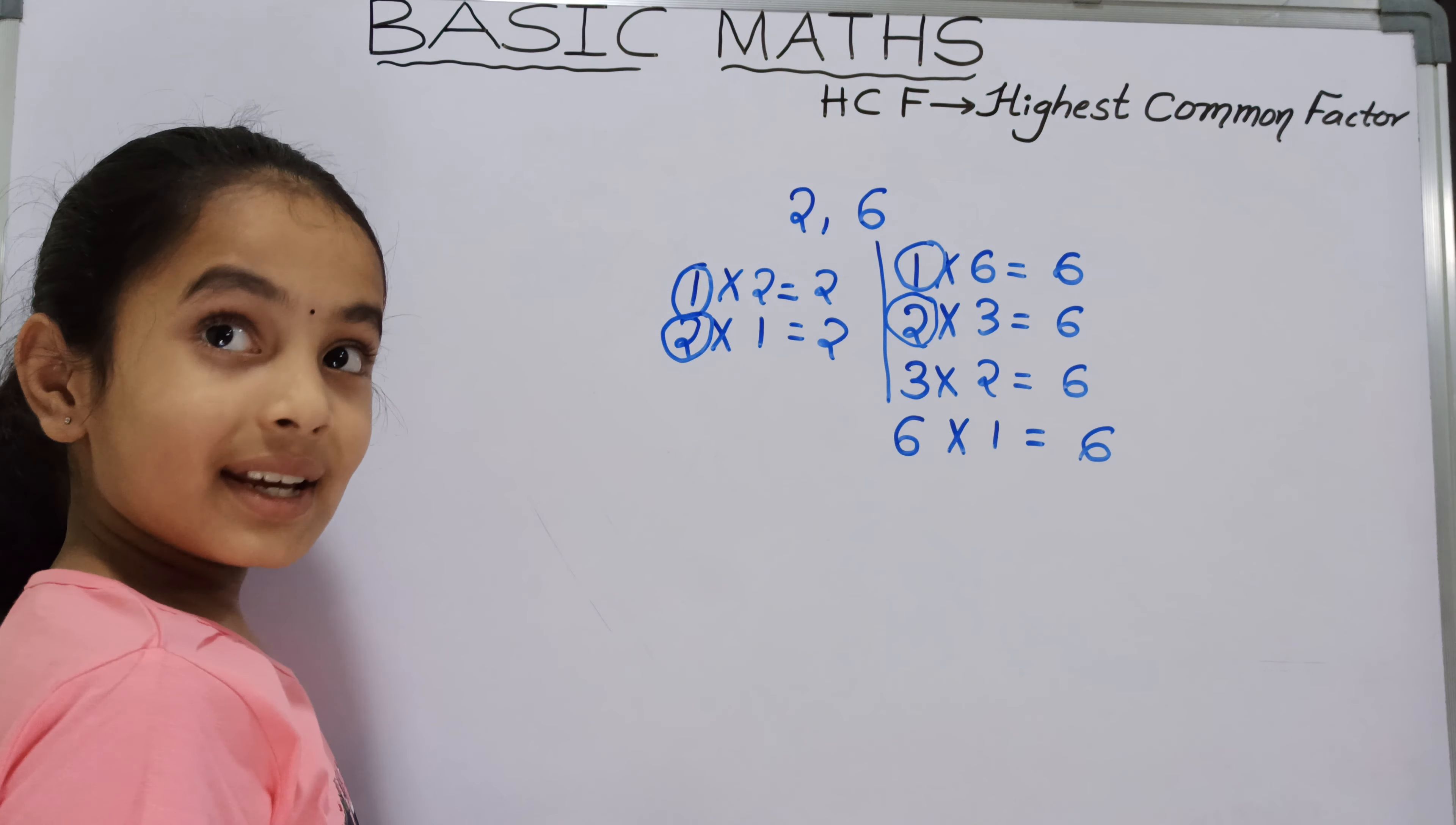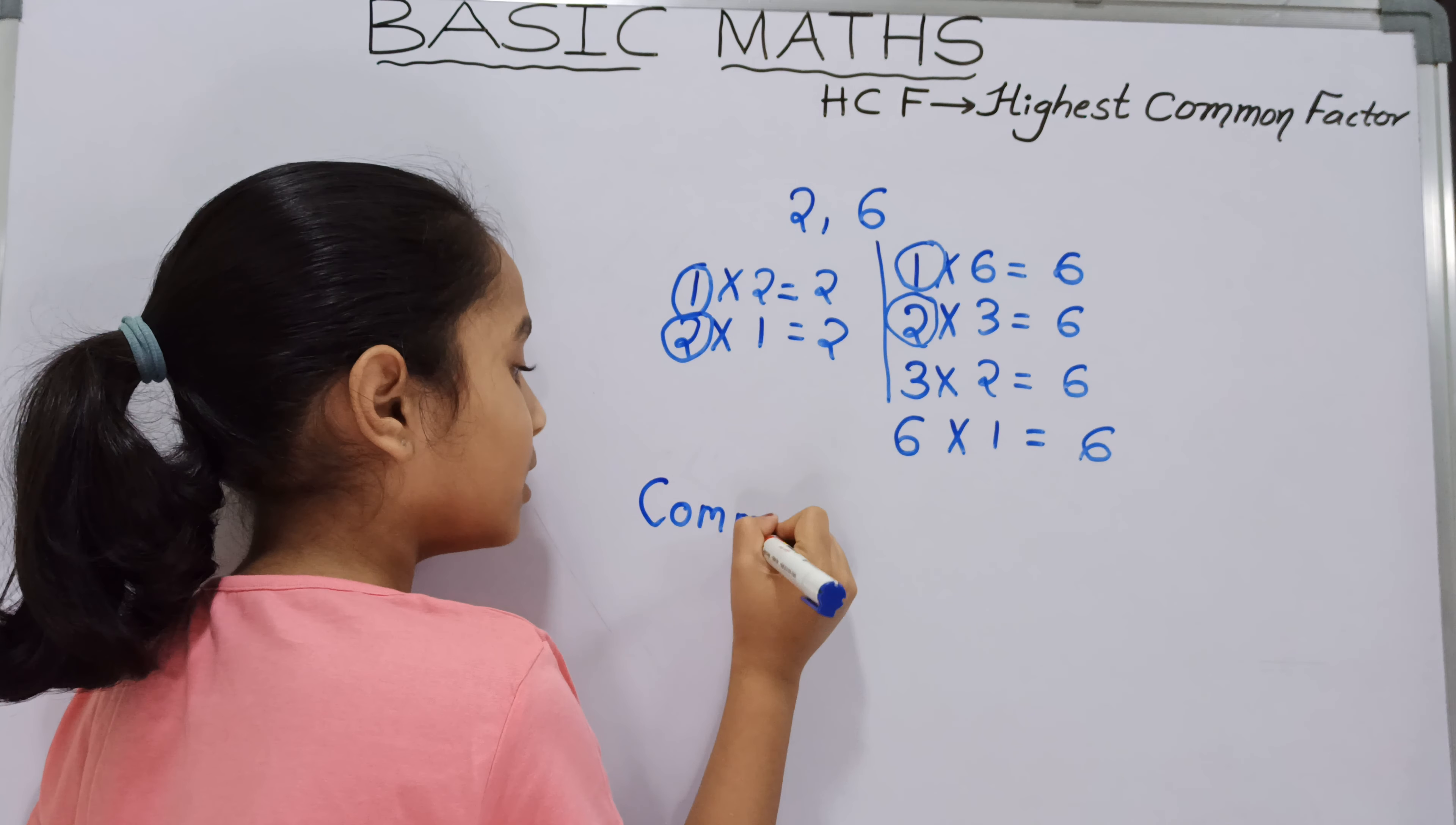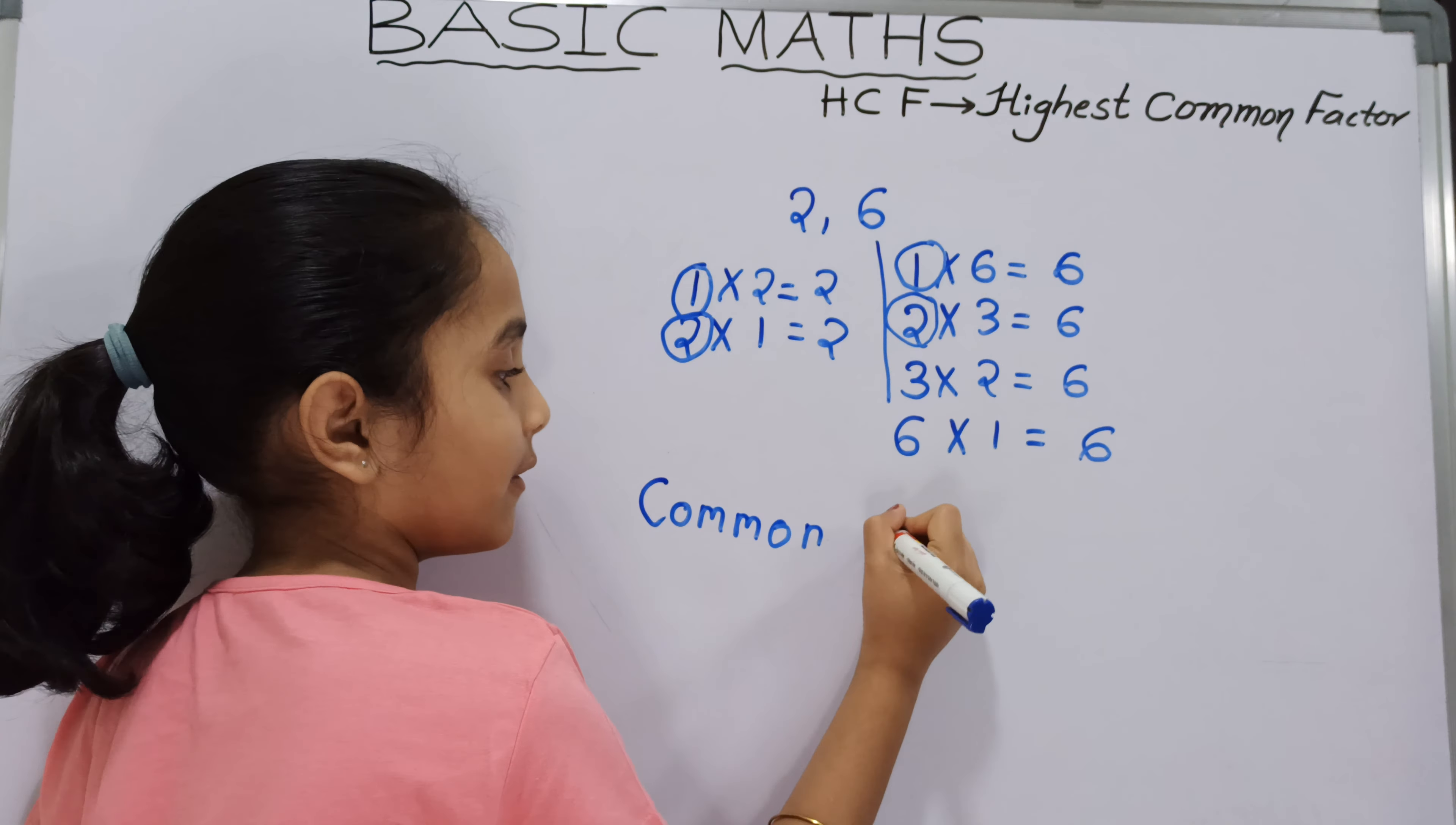Except this, is any number common? No. So we should write common factors are 1 and 2.